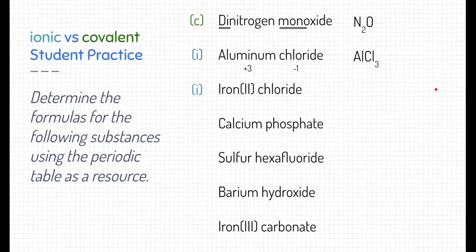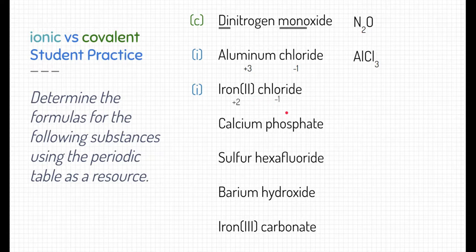The next example, iron(II) chloride, is also ionic — iron is a metal and chlorine is a nonmetal. Iron here has Roman numerals; looking at the periodic table won't tell us iron's charge, but the Roman numeral II tells us it has a positive two charge. Chlorine still has a negative one charge. So the ratio is FeCl2 — we need two chlorines attached to that one iron in order for all the charges to cancel each other out.